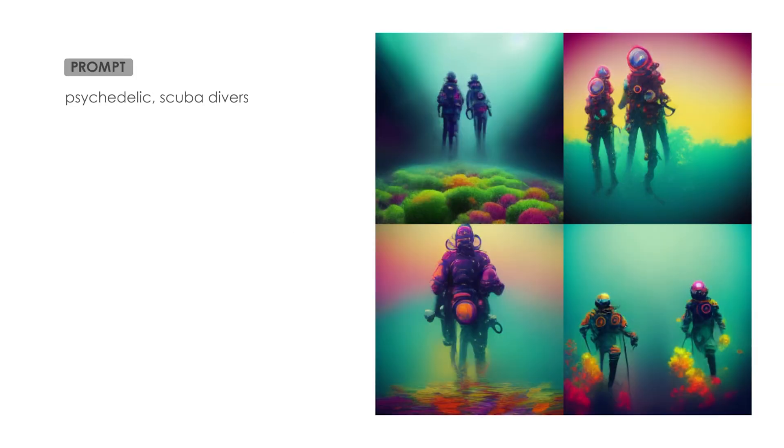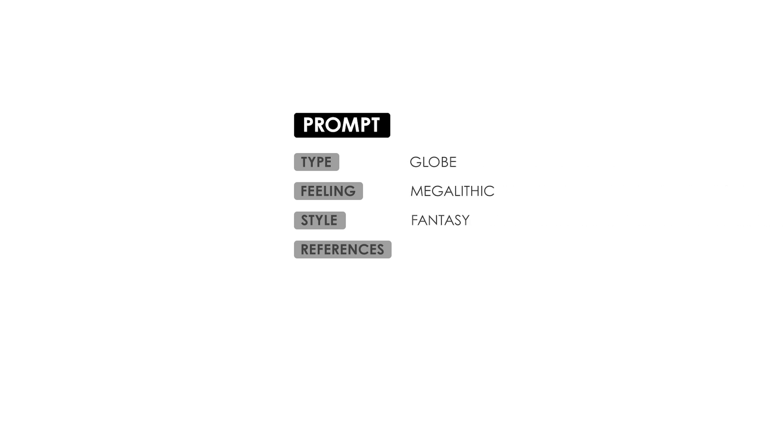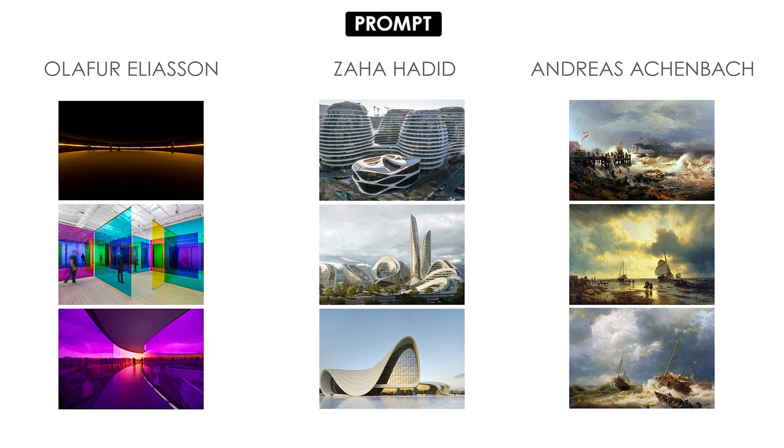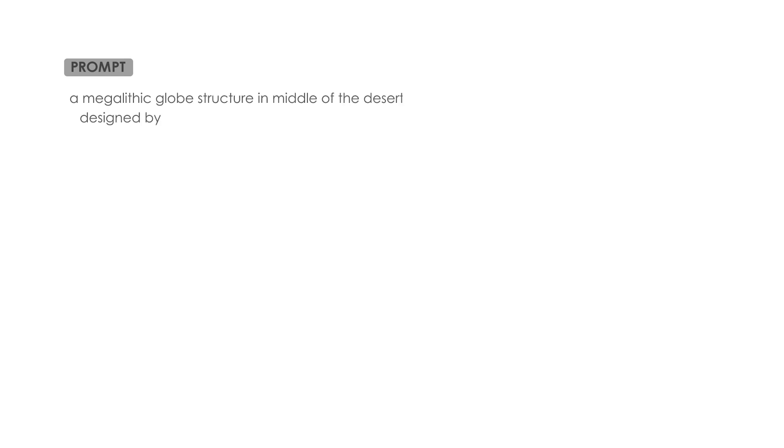MidJourney encourages you to use specific keywords that can describe a feeling, a style, or reference artists and compositions, and also to take two well-defined concepts and combine them in a strange way — for example, 'psychedelic scuba divers' or 'futuristic spaceship underwater.' So let's try something different: select a well-defined type of architecture like a globe, choose a feeling like 'megalactic,' next a style like fantasy, and finally some reference artists — Oliver Eliasson, Zaha Hadid, and Andreas Aikenberg. The final prompt: 'a megalactic globe structure in desert designed by Oliver Eliasson, Andreas Aikenberg, and Zaha Hadid with a fantasy style render.'